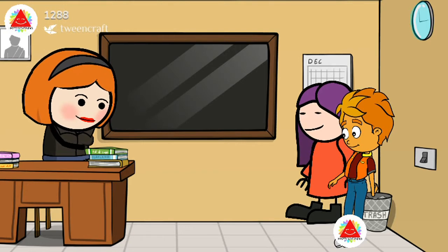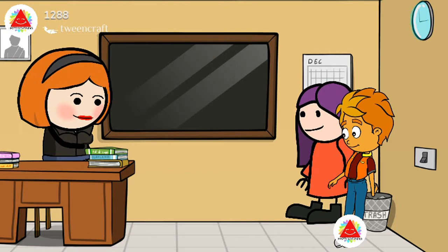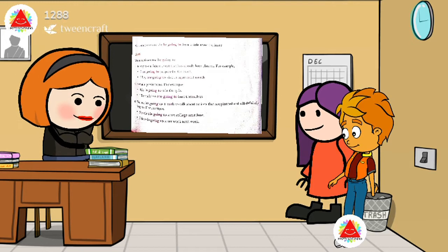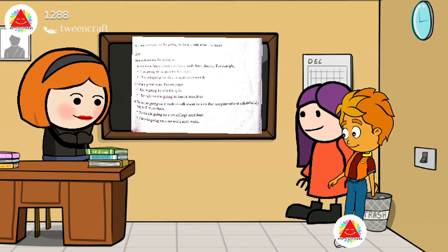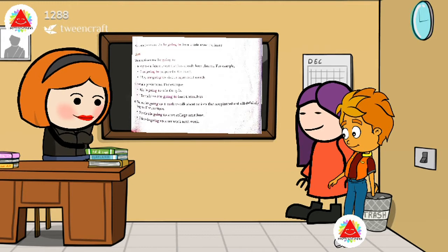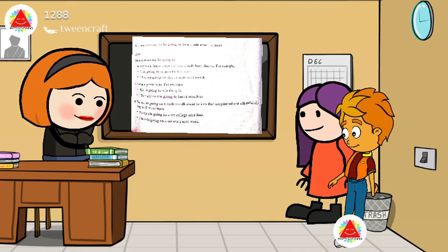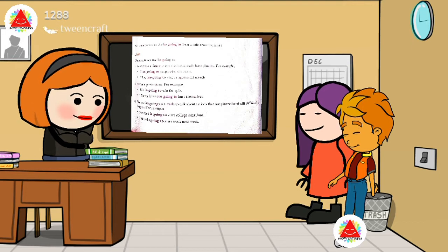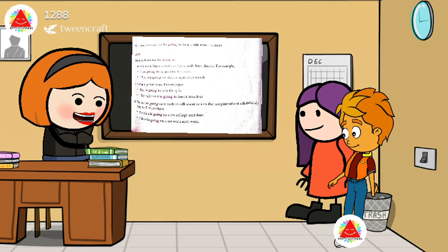We sometimes use the 'be going to' form to talk about the future. We use 'be going to' to express a future event that has already been planned. For example: I am going to prepare for the exam. They are going to visit us again next month. We use 'be going to' to make predictions: Rita is going to win the quiz. The children are going to hurt themselves. We also use 'be going to' to talk about actions that are planned and will definitely happen: Savitri is going to start college next June. Diane is going to start work next week.